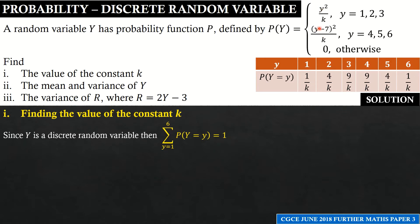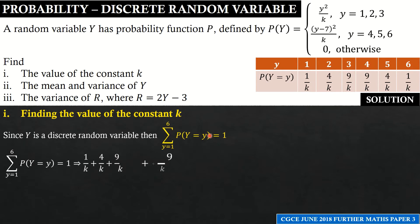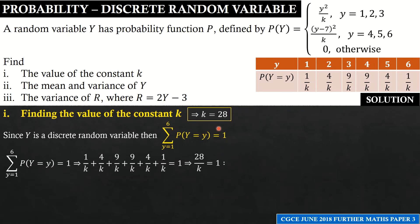When y = 4 we use the second function: (4−7)² = 9/k. When y = 5: (5−7)² = 4/k. When y = 6: (6−7)² = 1/k. Summing all probabilities and equating to 1: 1/k + 4/k + 9/k + 9/k + 4/k + 1/k = 1. The numerators sum to 28, giving 28/k = 1, so k = 28.